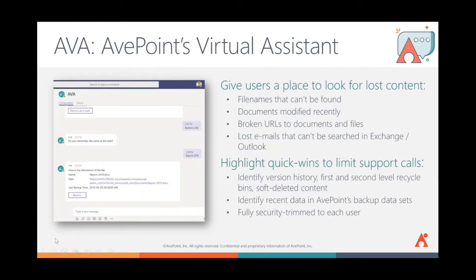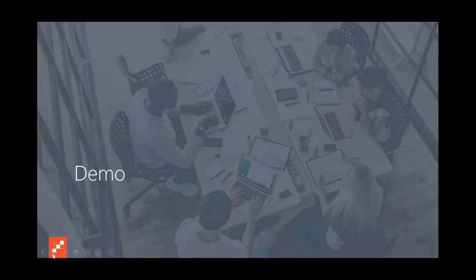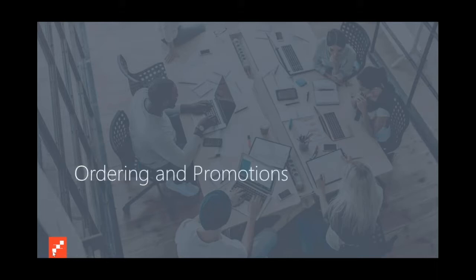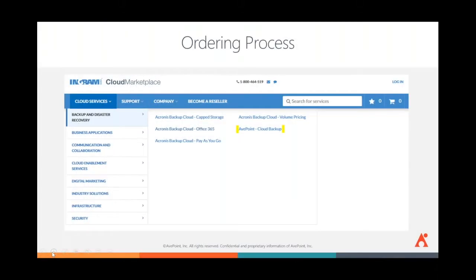Now that we've learned about AvePoint and Cloud Backup services, let's look at how to order. Head over to the Ingram Micro Cloud Marketplace for Australia at au.cloud.im. Existing partners log in at the top right; new partners can click 'Become a Reseller' to register. To select AvePoint Cloud Backup, search for AvePoint in the search field or navigate through Cloud Services > Backup and Disaster Recovery > AvePoint Cloud Backup.